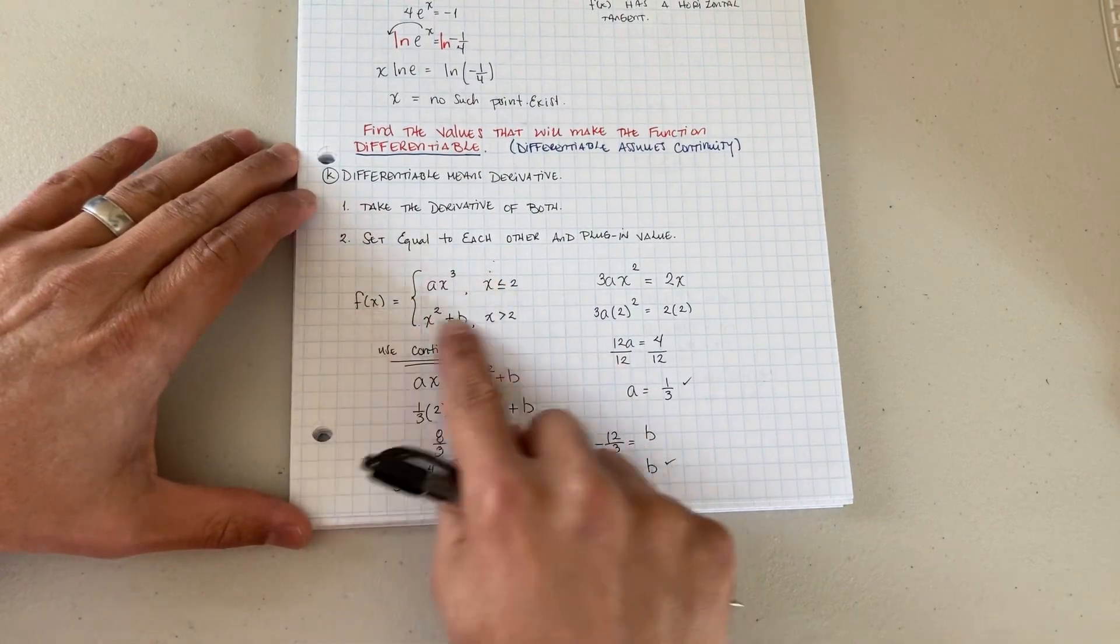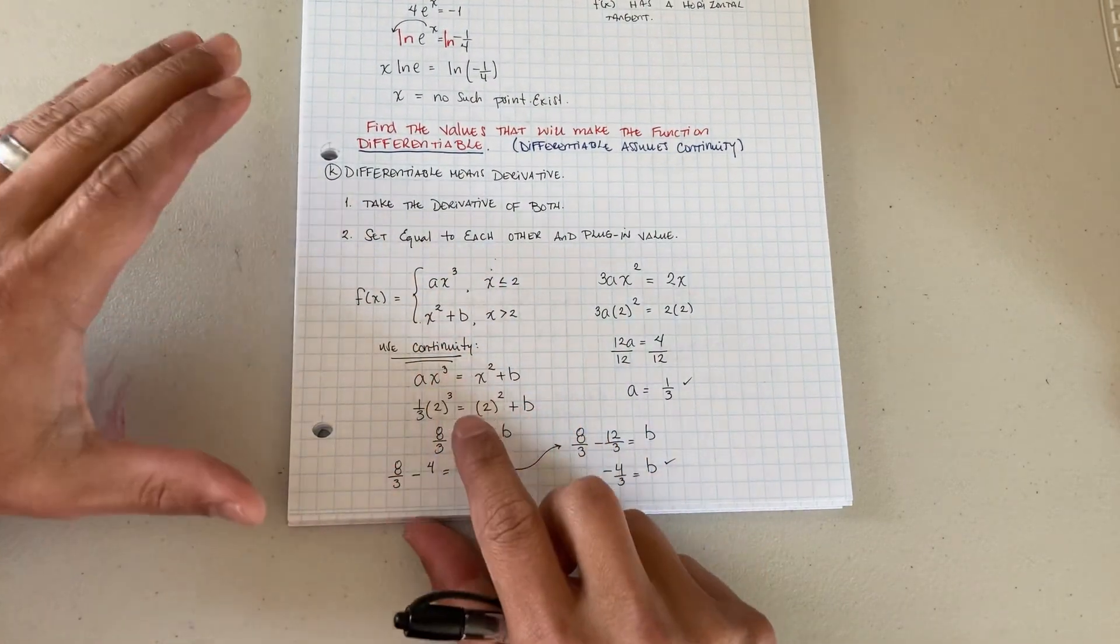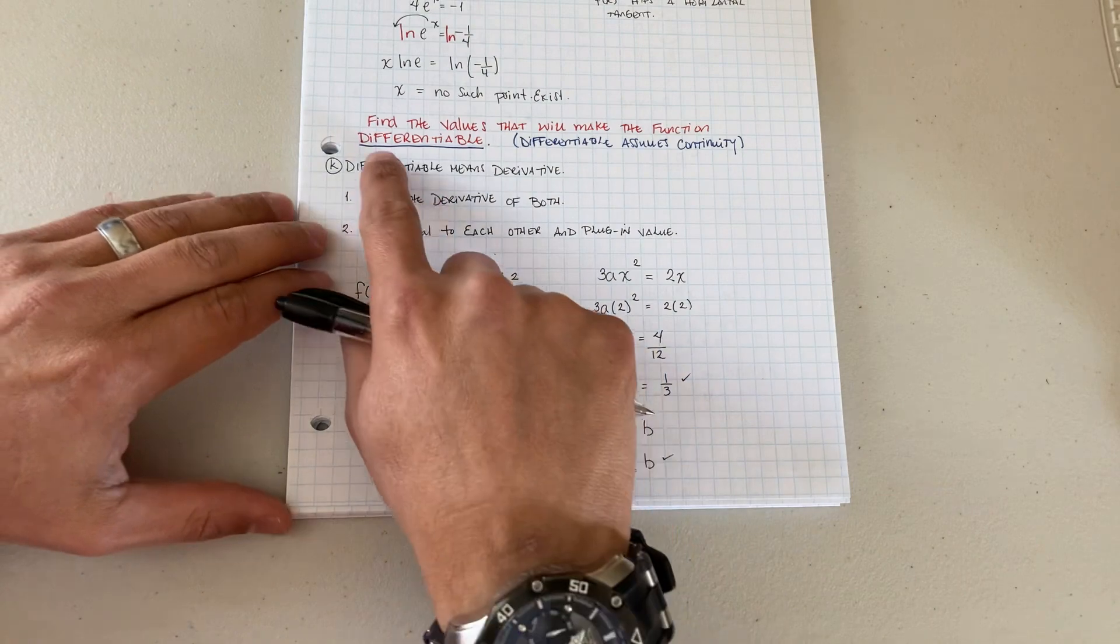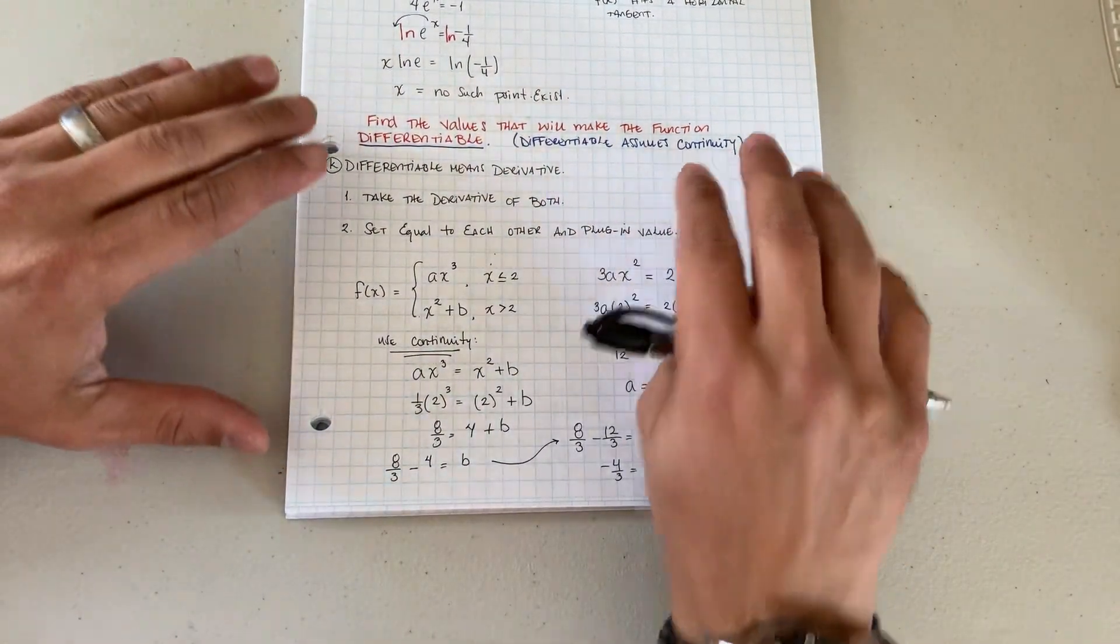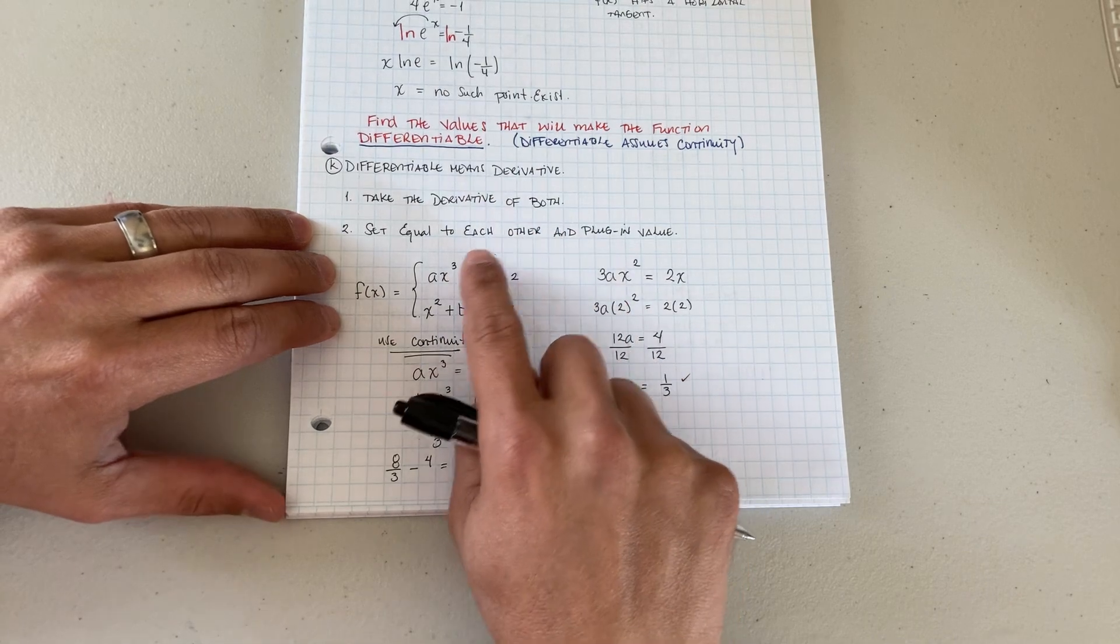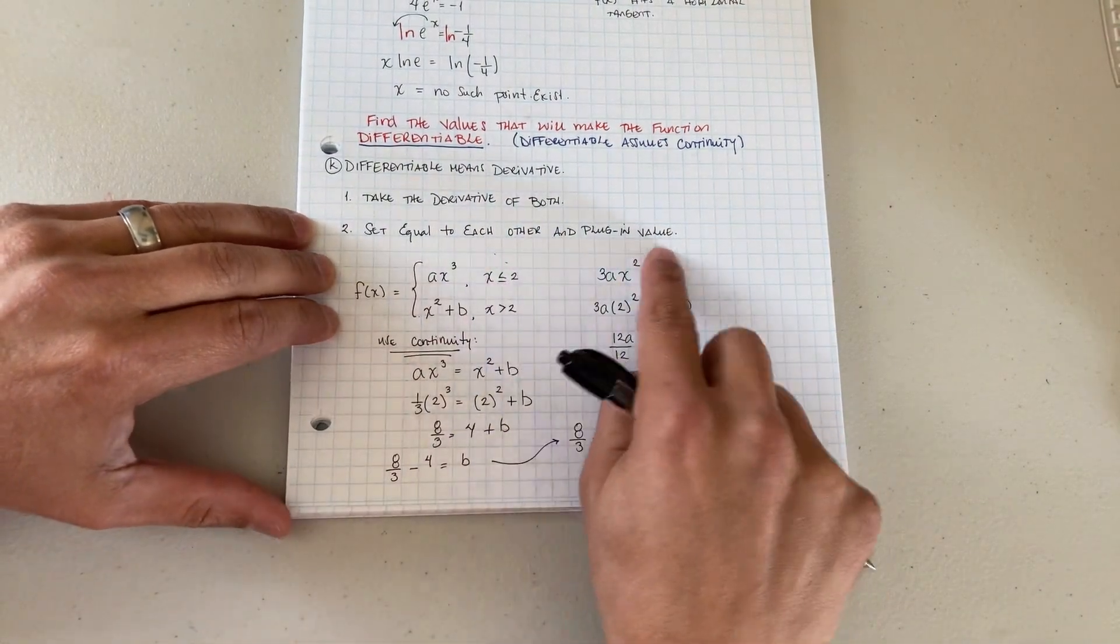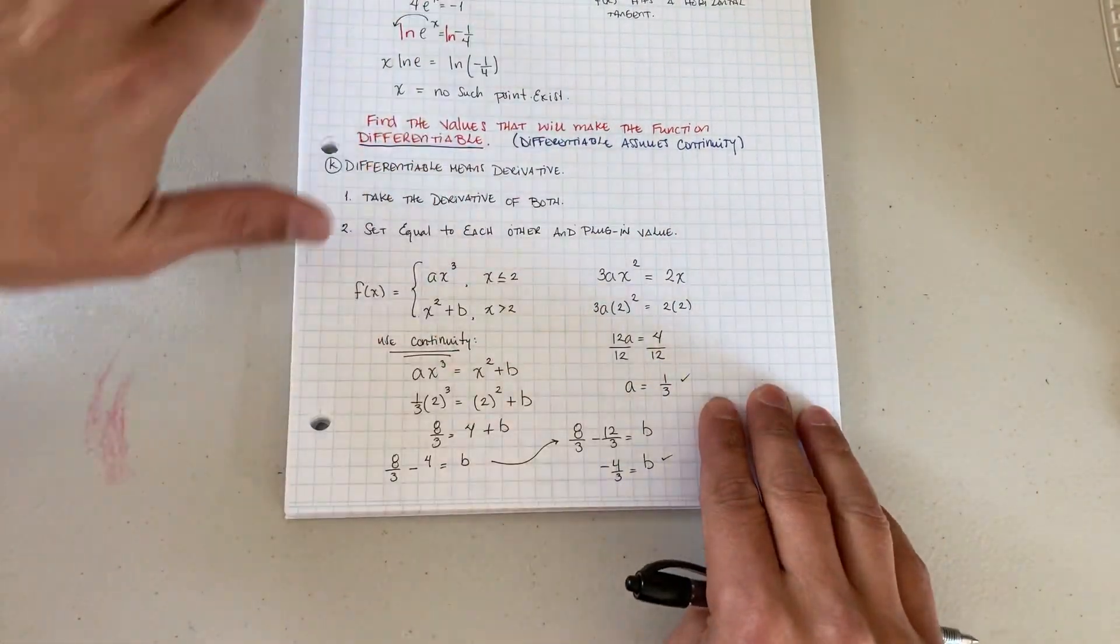Here we have this example. When it says differentiable, we're assuming it's already continuous. You're going to take the derivative of both, you can set them equal to each other and just plug in that value that's in question.